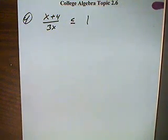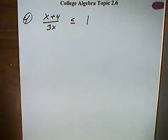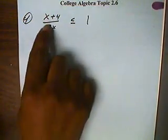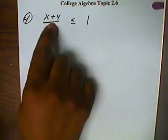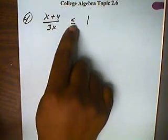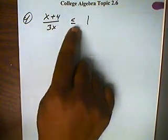College Algebra, Topic 2.6. We'll be solving rational inequalities. This is rational because of that big fraction bar there. Inequality because we're using less than or greater than signs.